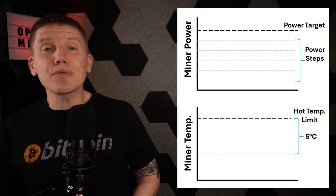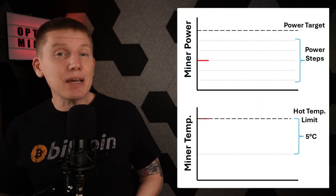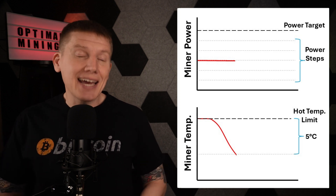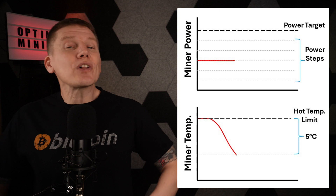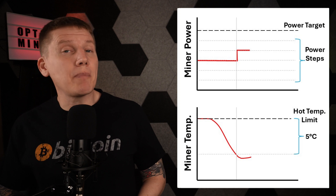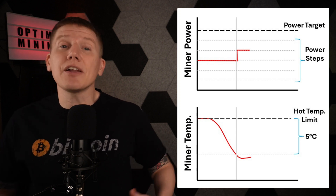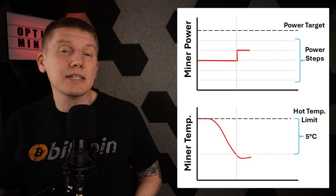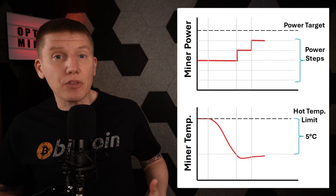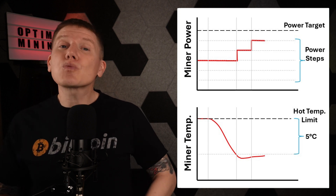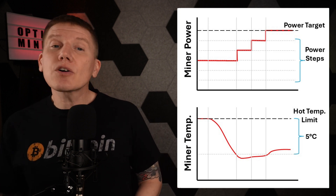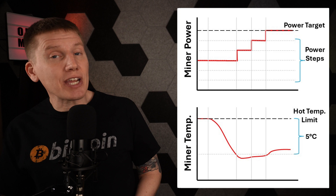Conversely, if the heat loss from the miner increases and the temperature of the miner drops 5 degrees C below that hot temperature limit, dynamic performance scaling will increase the miner power by that power step interval. If the temperature continues to drop another 5 degrees C below that hot temperature limit, the dynamic performance scaling will increase the power by another power step interval. This process will continue, increasing miner power until the miner operation returns to that power target level.